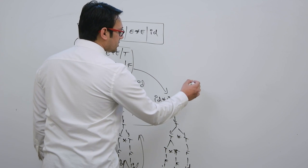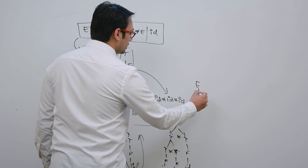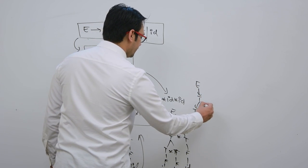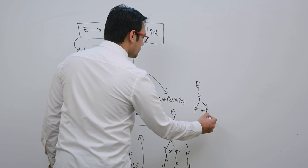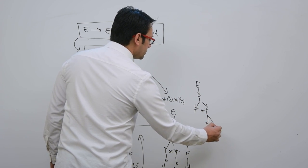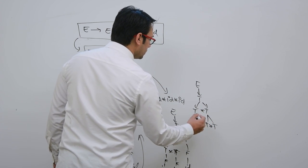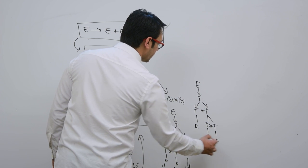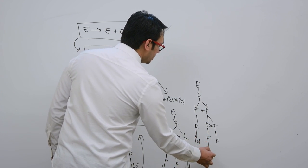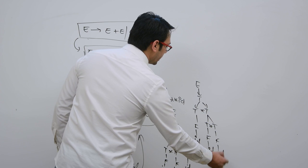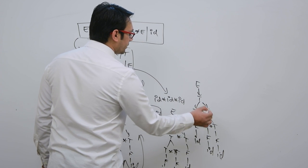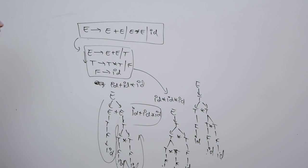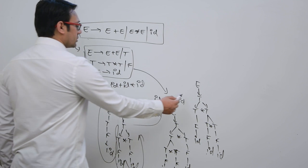Is there any other parse tree for this? E can generate T. T can generate T star T. This T can generate T star T. This can generate F, this can generate F, this can generate F. F can generate ID, this can generate ID, this can generate ID. So it is ID multiplied by ID multiplied by ID. Hence there are two different parse trees possible for this.